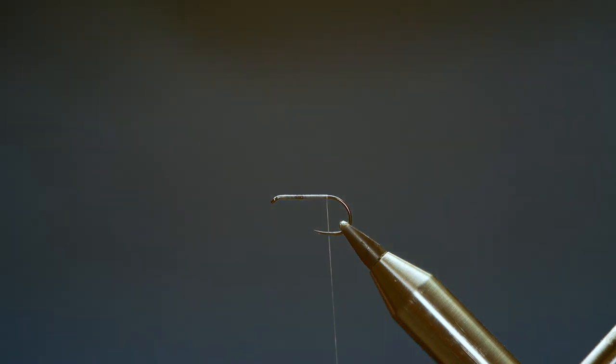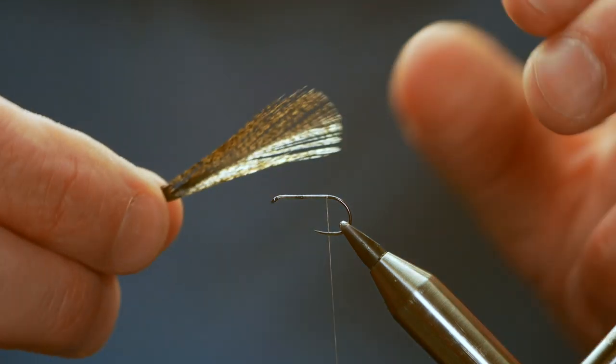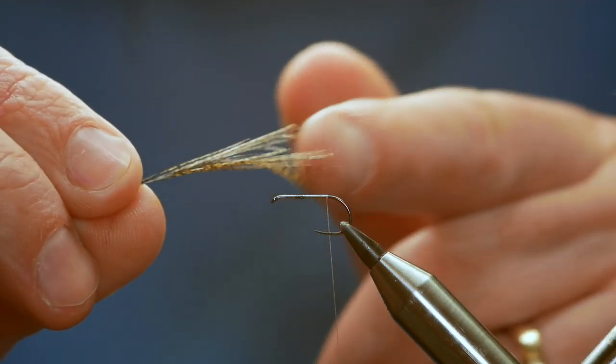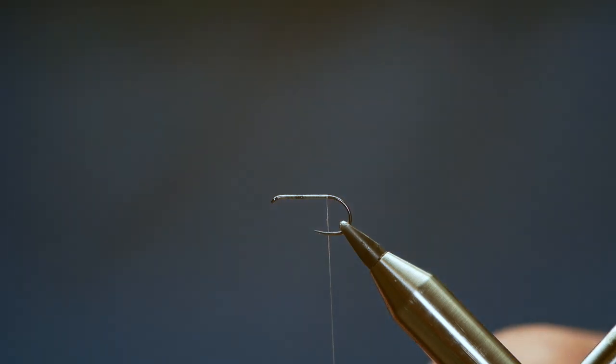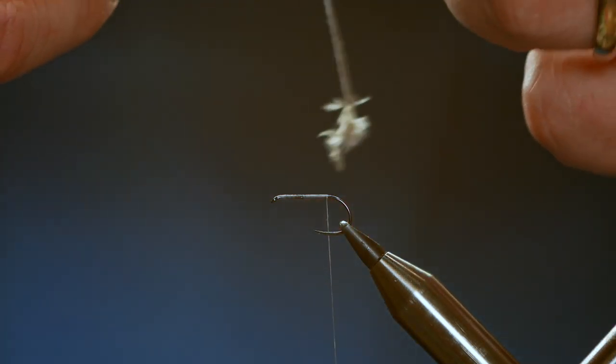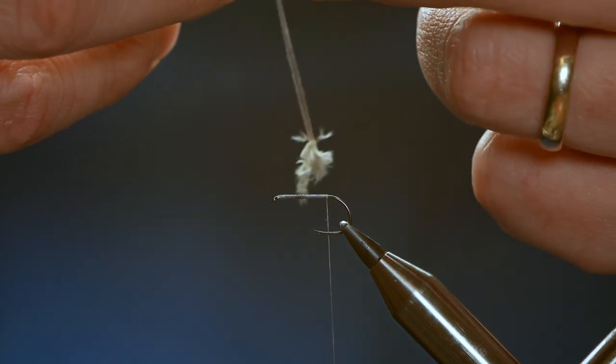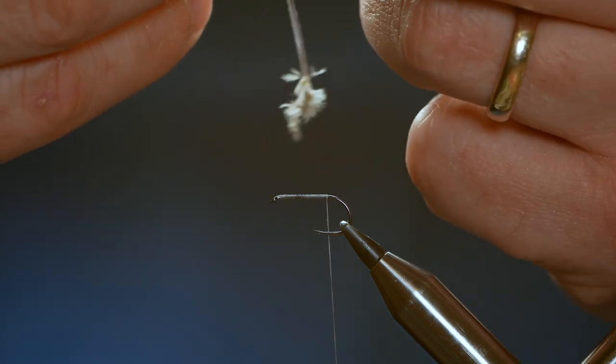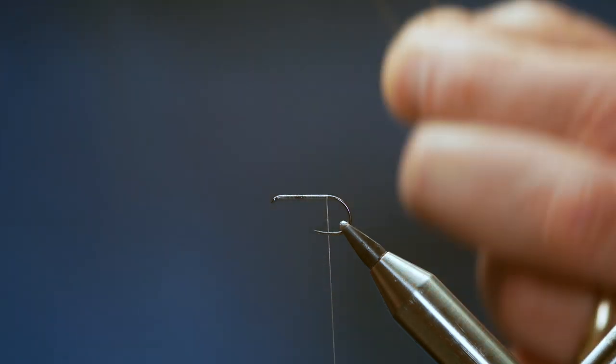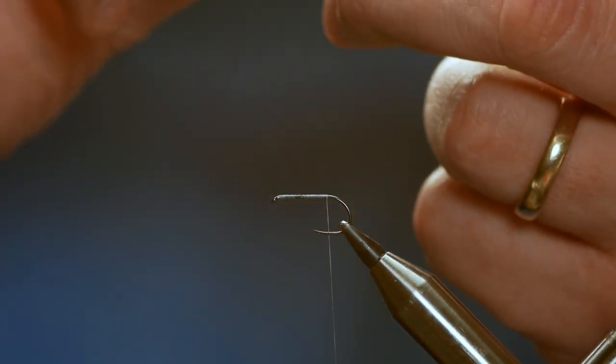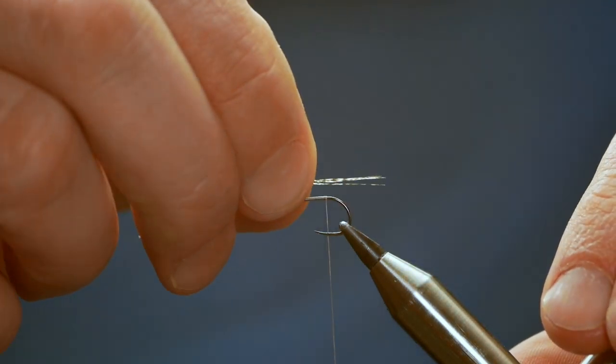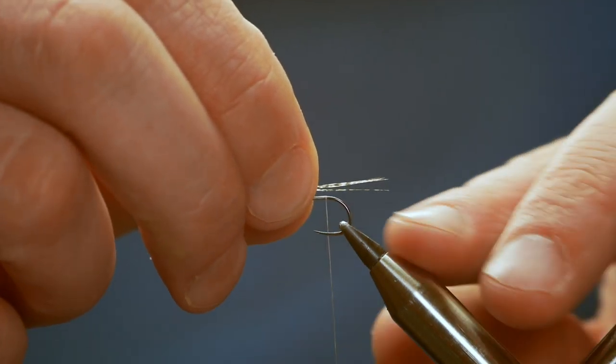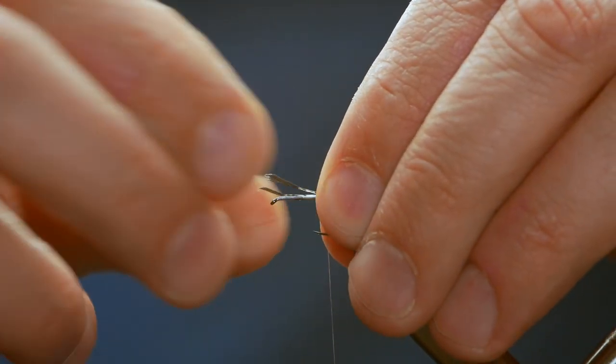The tail of this fly is Coq de Leon feather. As you can see it's a browny black speckled feather and I'm going to take approximately six or seven strips from the stock and show it up to the hook. I want it to protrude about a centimeter past the bend of the hook for this fly.